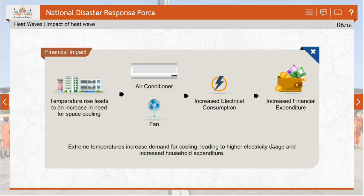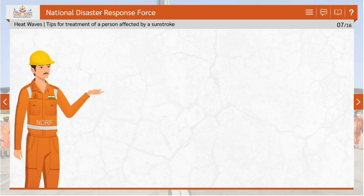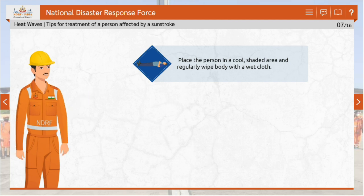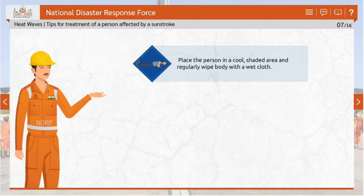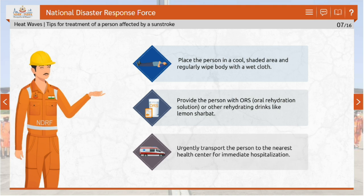Let us now understand resilience strategies against heat wave for home. In case of a person affected by sunstroke, let the person lie in a cool place under a shade. Wipe them with a wet cloth and wash the body frequently. Pour normal temperature water on the head. The main goal is to bring down the body temperature. Give the person ORS to drink, or lemon sherbet or other rehydrating drinks. Take the person immediately to the nearest health center, as heat strokes could be fatal.